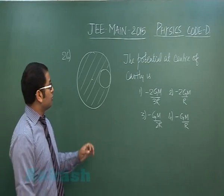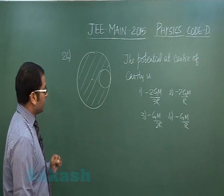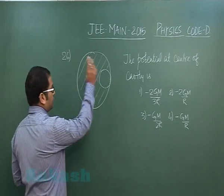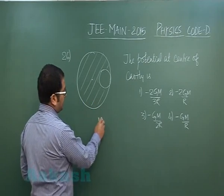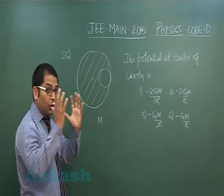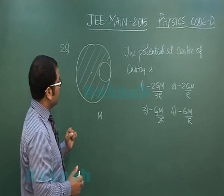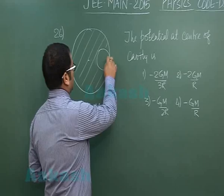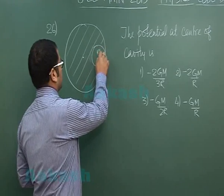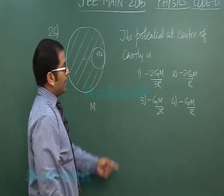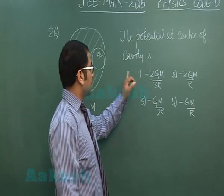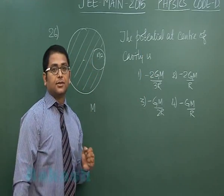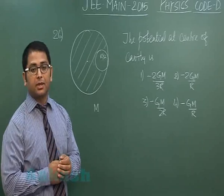Proceeding to question number 26 from gravitation. It's a uniform sphere of mass M. The sphere without cavity had mass M, and from that a spherical cavity has been taken out of radius r/2. I need to calculate the potential at the center of this cavity.